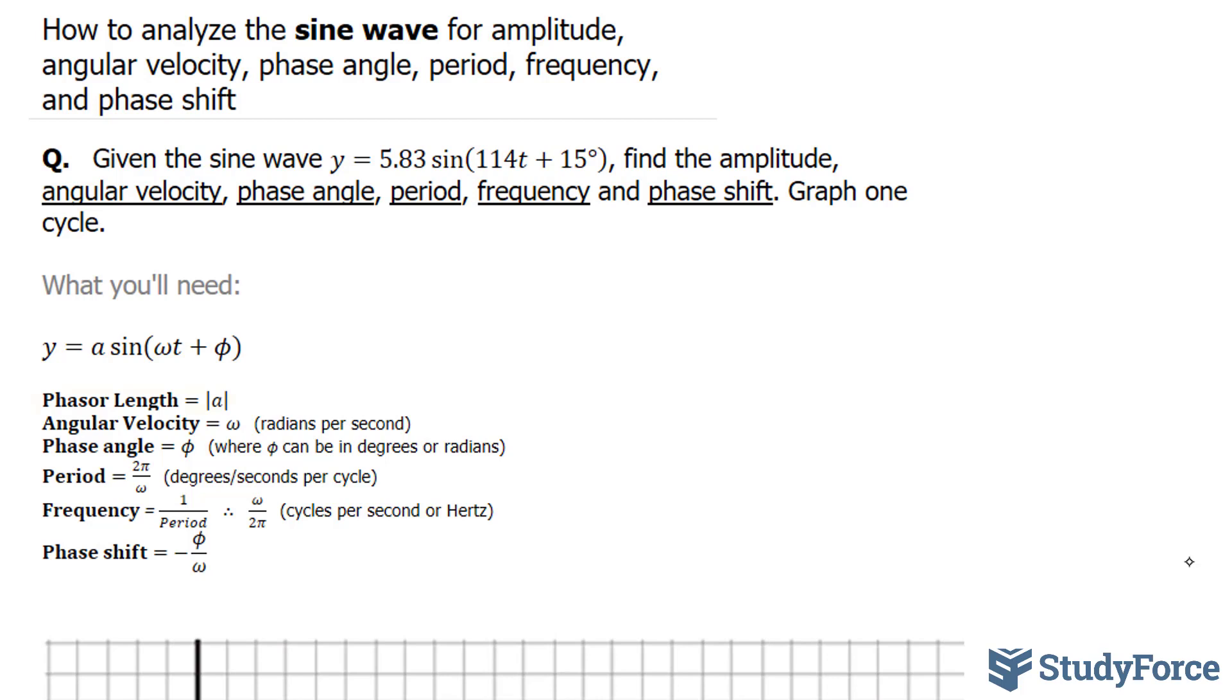Let's start with phasor length. The phasor length is the amplitude of the sine wave, and that is this number right here. To find the phasor length, which I'll represent as PL, you have to take the absolute of whatever that number is. In our case, that number is positive 5.83, so that itself is our phasor length. If it were negative, it would still be the following answer.